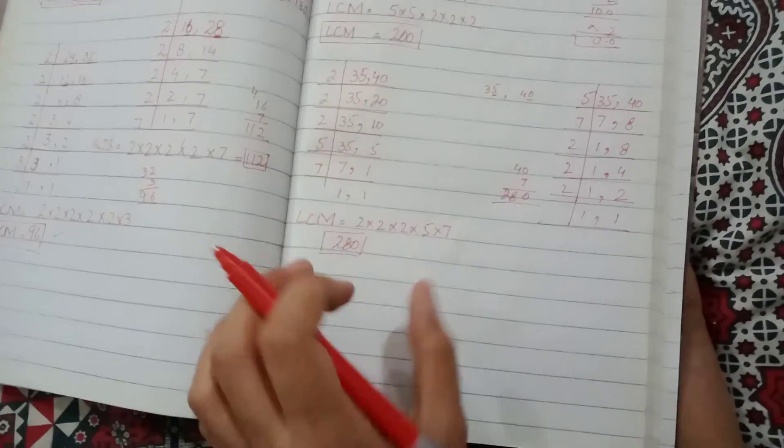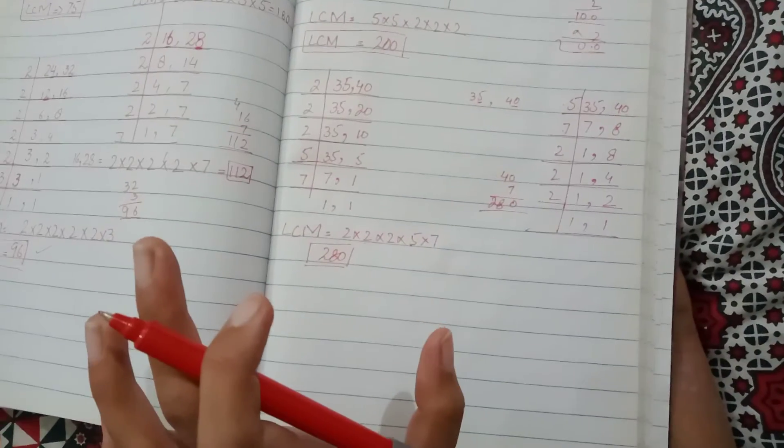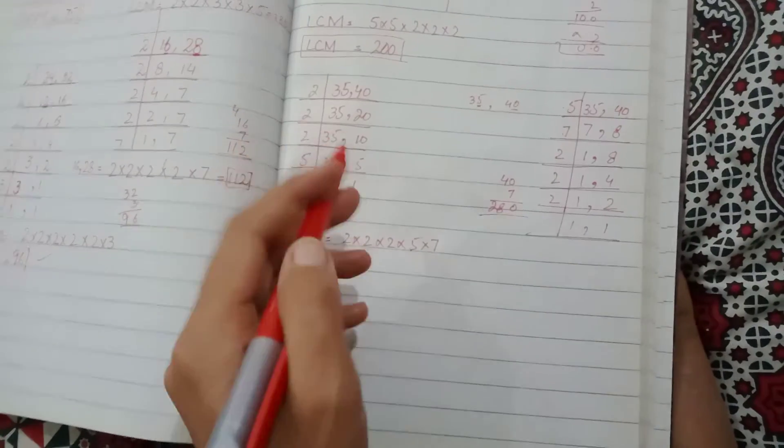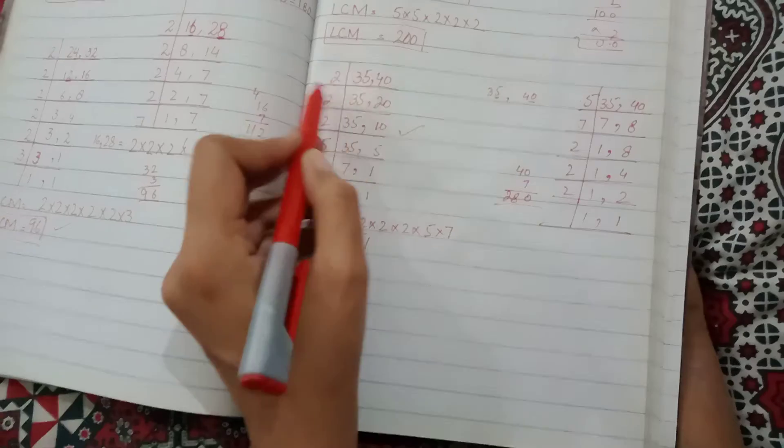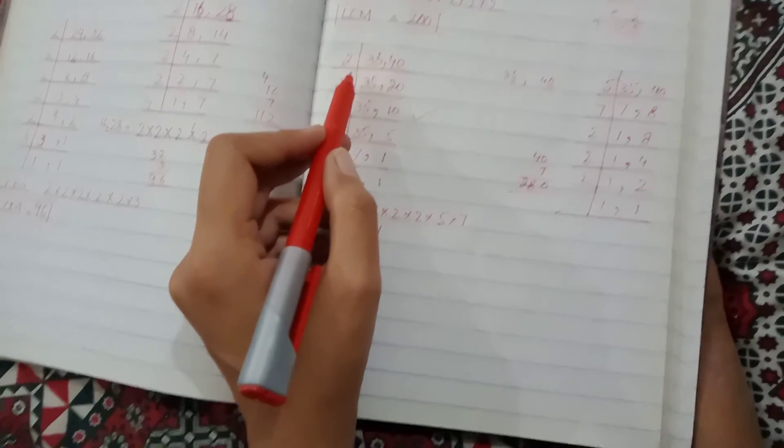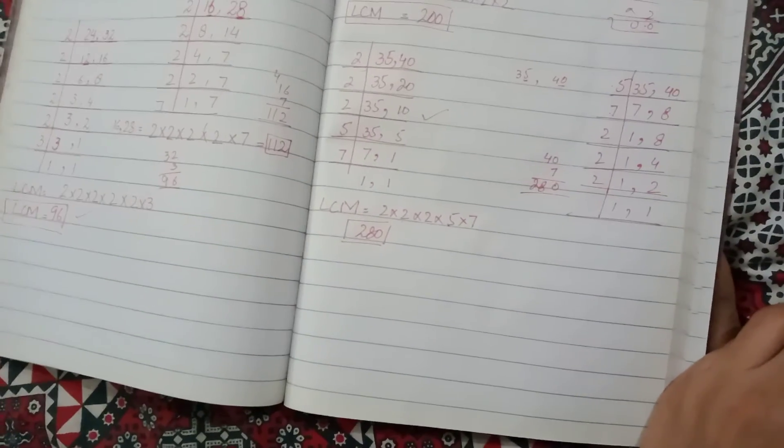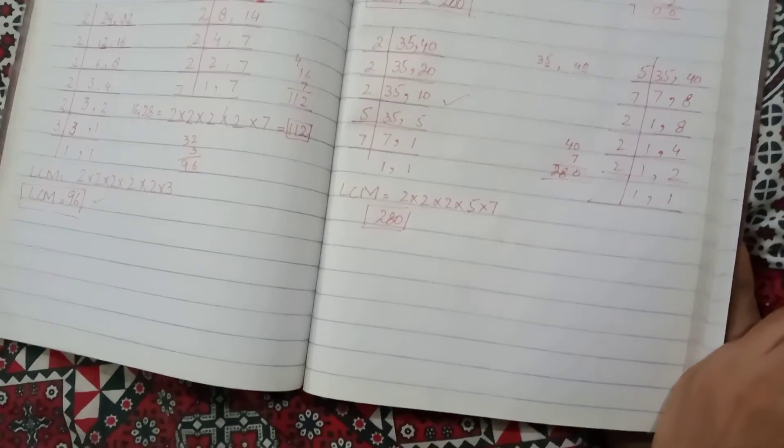5, 7, and 3 times 2. 5, 7, and 3 times 2. So the answer will be 280. It's up to you where to start. The best approach is that you can start with minimum numbers. So I hope you understand this. This is how to find the LCM of 35 and 40.